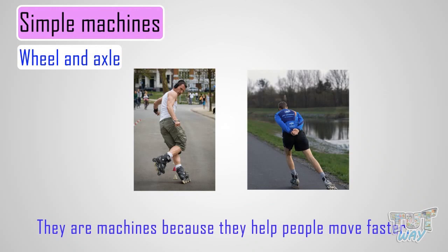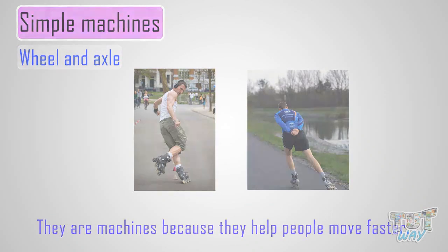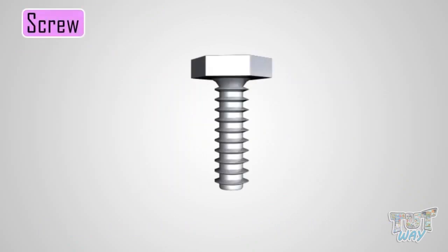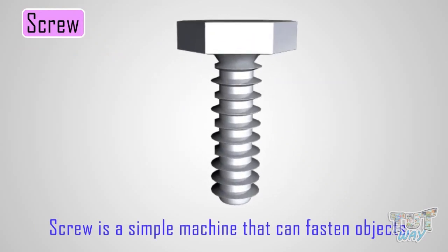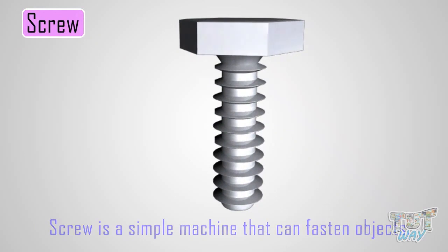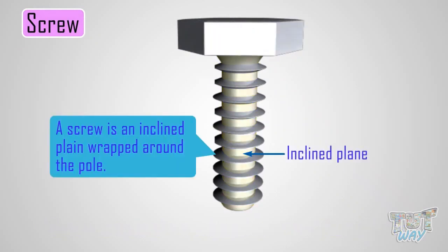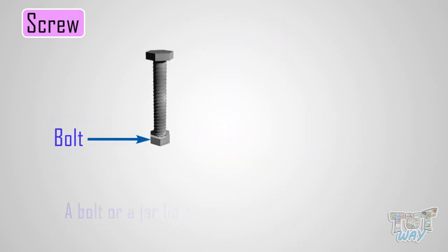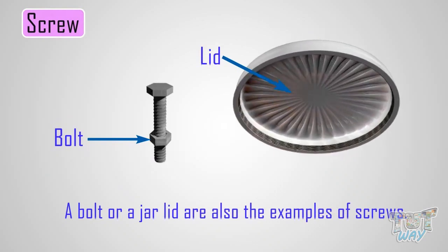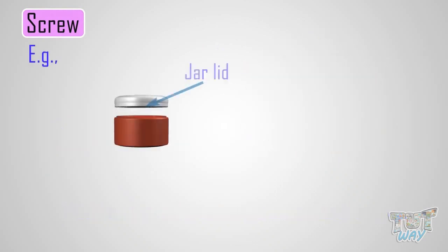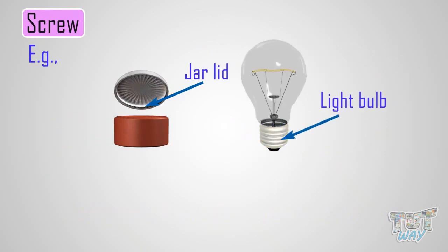Now let's learn another simple machine, which is a screw. A screw is a simple machine that can fasten objects. A screw is an inclined plane wrapped around a pole which holds things together or lifts materials. A bolt and jar lid are also examples of screws. Screws can be found on jar lids and light bulbs.